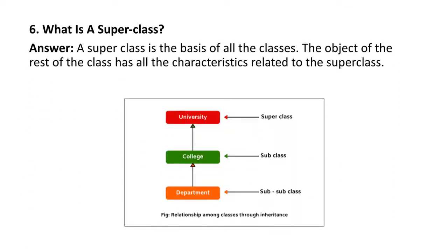Next question: what is a superclass? A superclass is the basis of all classes; objects of the rest of the classes have all characteristics related to the superclass. For example, university is the superclass, college is a subclass, and department is a sub-subclass. So university is the base of college as well as department, and both share the characteristics of the superclass.